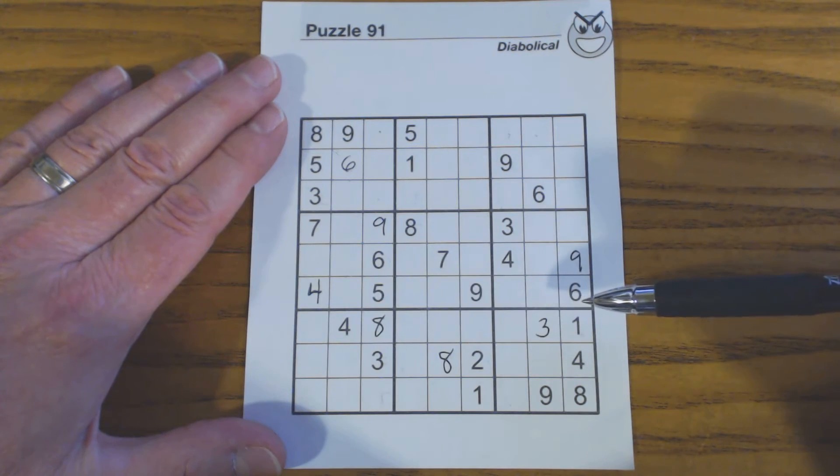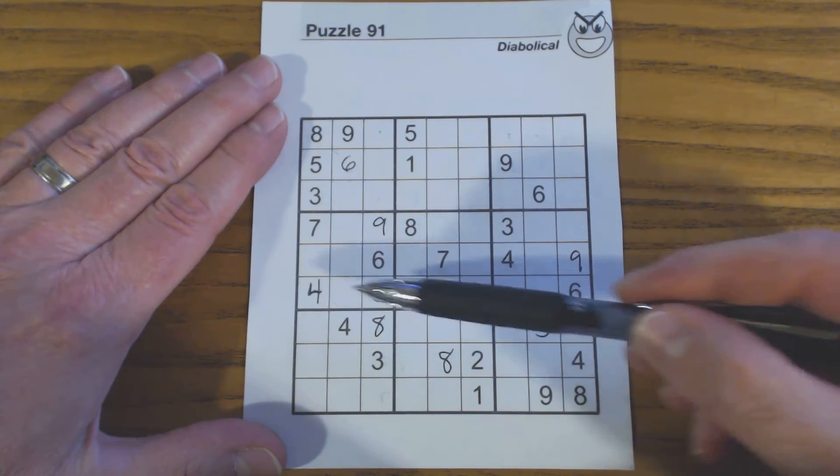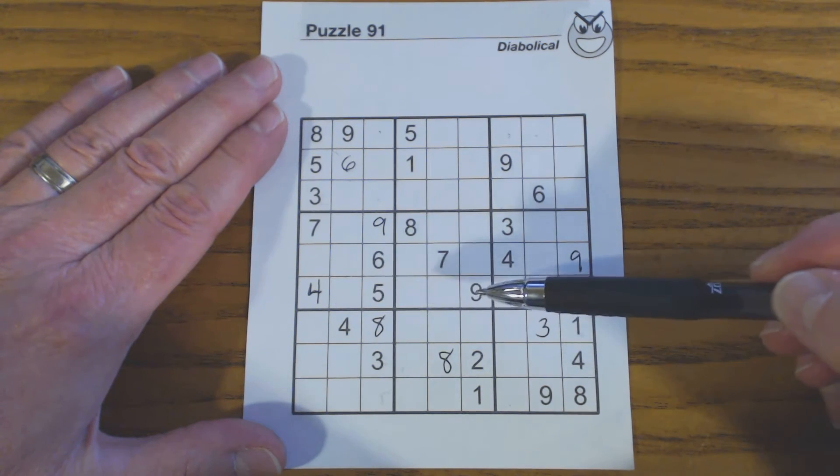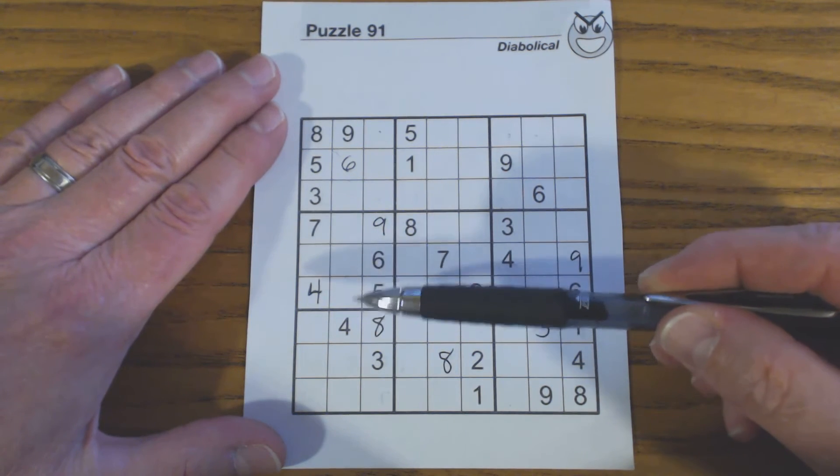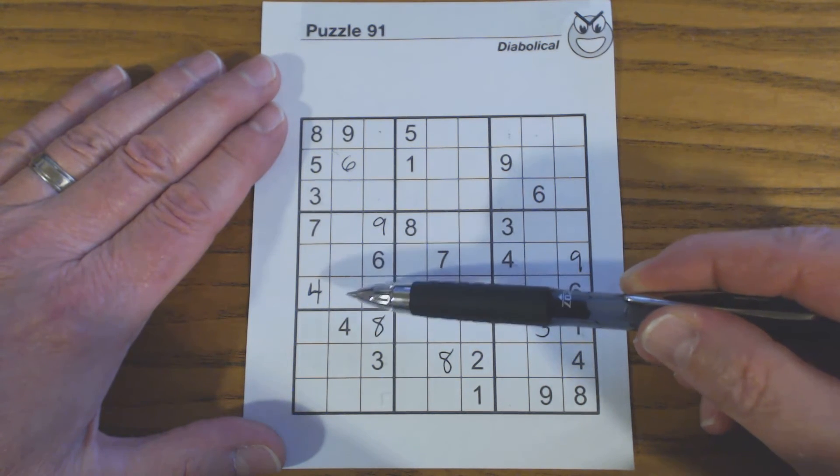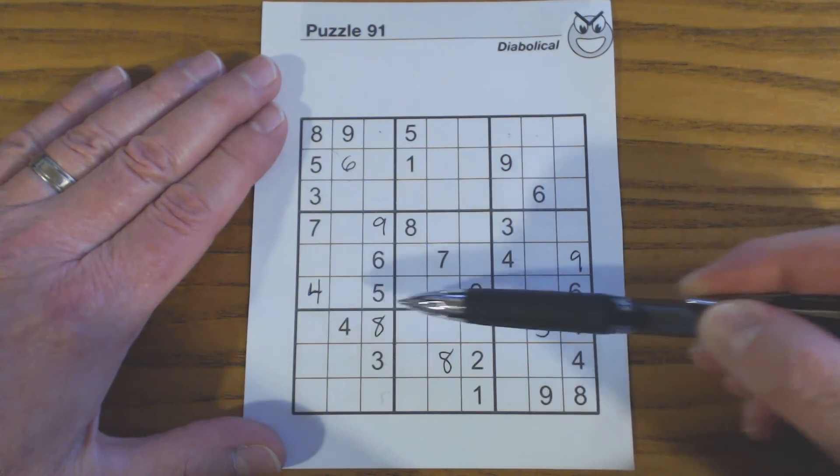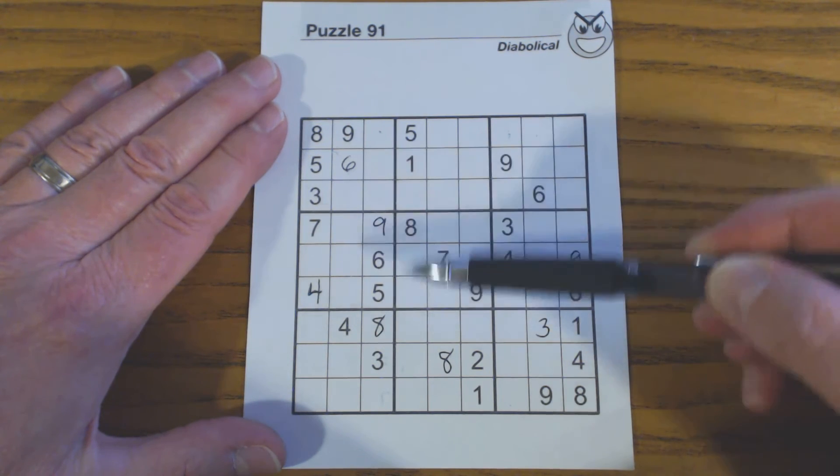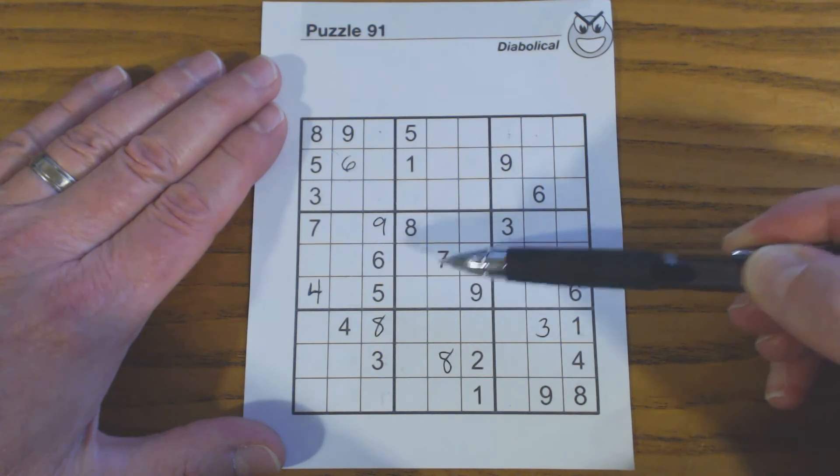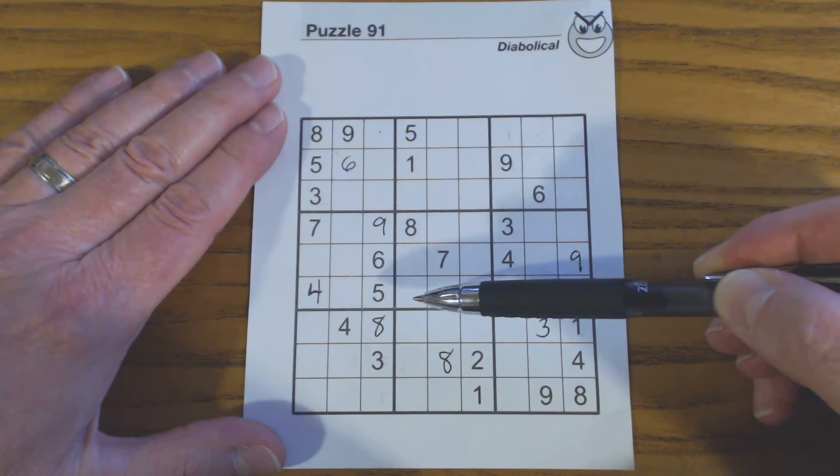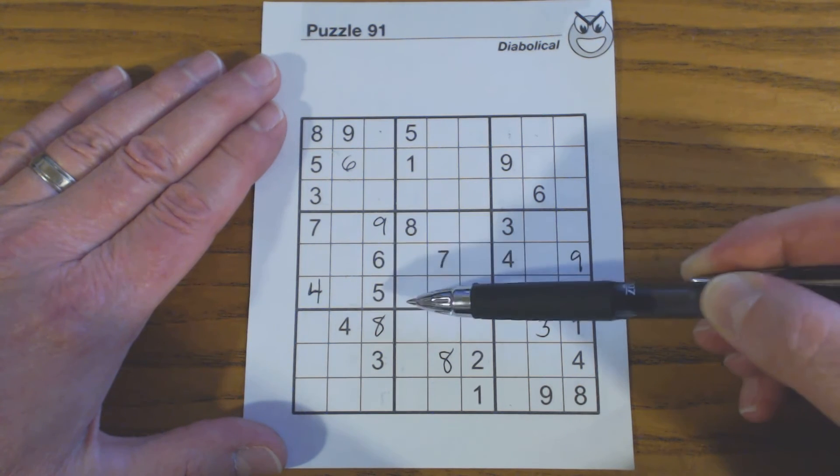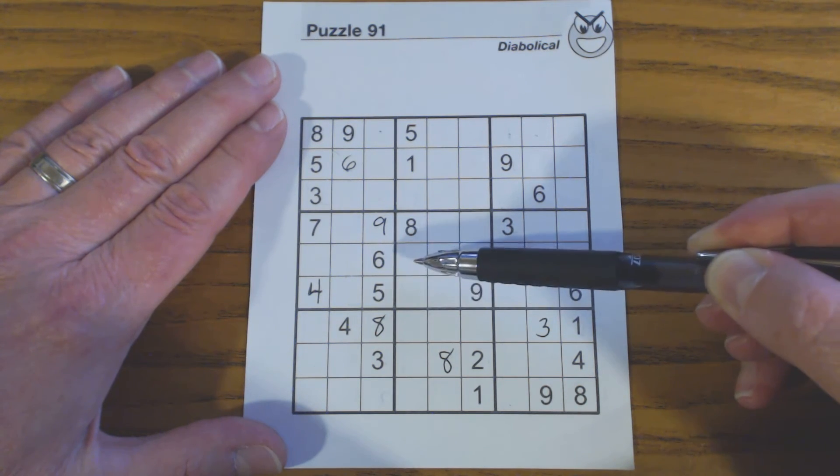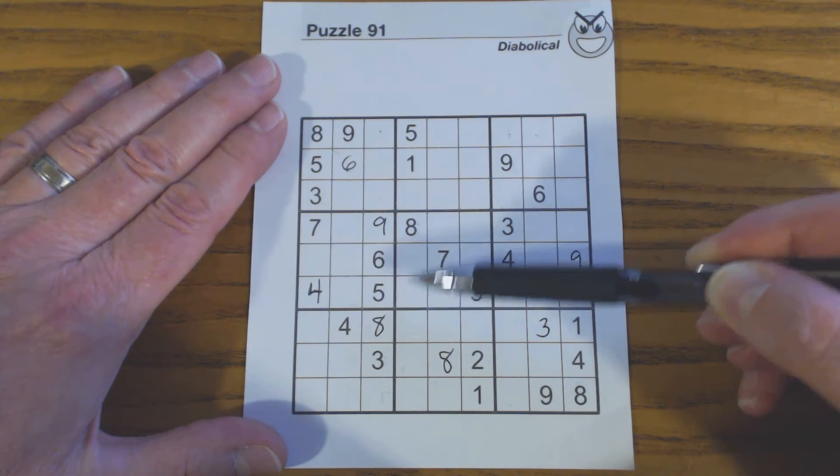Let's look at this row. The missing numbers are 1, 2, 3, 7, 8. We've got a 3, 8 here. So that's a 2, 3. Okay, we've got a 2, 3 and a 2, 3 here. So those are twins.